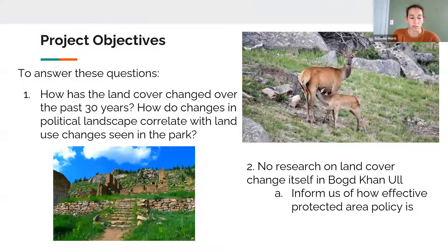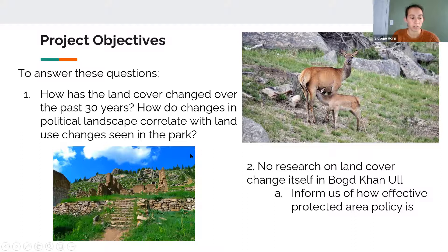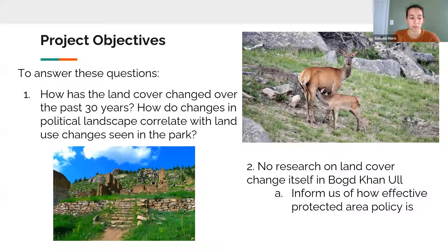The goals of this project are to answer two questions: first, how has the land cover and land use changed over the past 30 years? Once we have a baseline for what change has occurred, we want to figure out why. Our second question addresses that — how changes in political landscapes and economic priorities correlate with the land use and land cover changes we expect to find. No research has been done on land cover change in Bogd Khan Ula, so results from this project will give new information about the park, the effects of urbanization on natural landscapes, and insight into the effectiveness of protected area land policy.